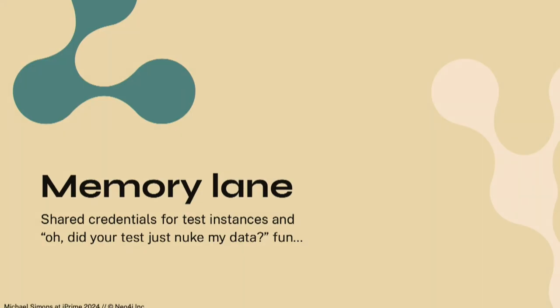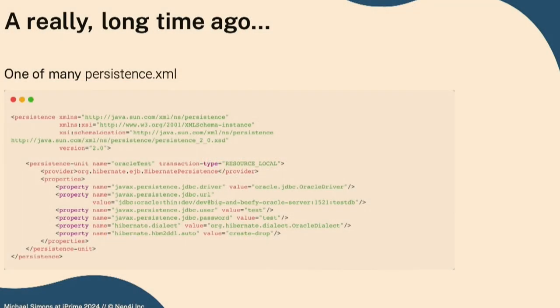We had a couple of involuntary regression tests — found quite a few bugs — by testing our Spring Data module. Memory lane: anyone remember a dialogue that went like 'Did you just nuke my test data?' — 'We share test servers.' Not as fun as it sounds. It was a long time ago. One persistent XML, shared test server, shared credentials, tests running at the same time getting invalid results.